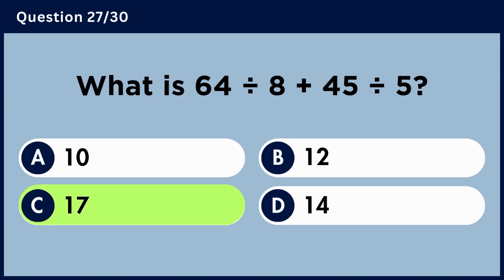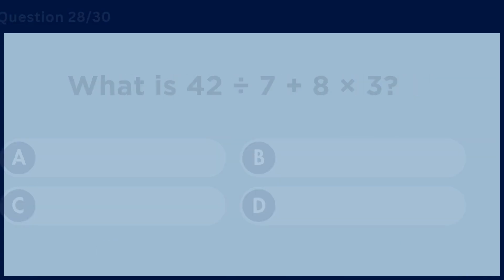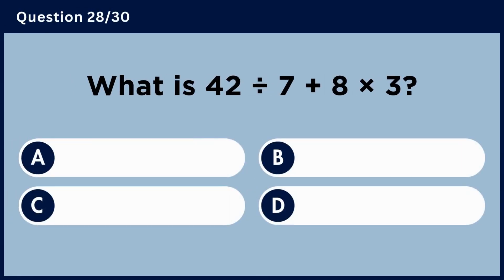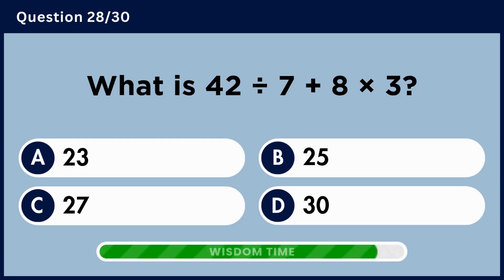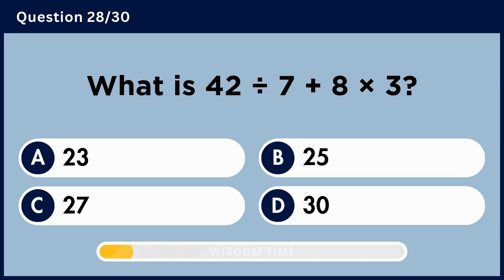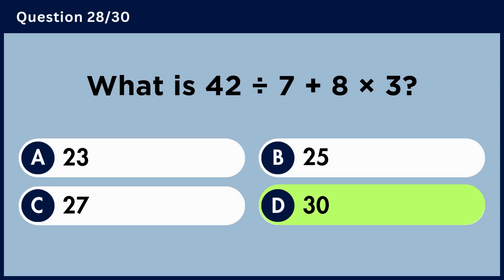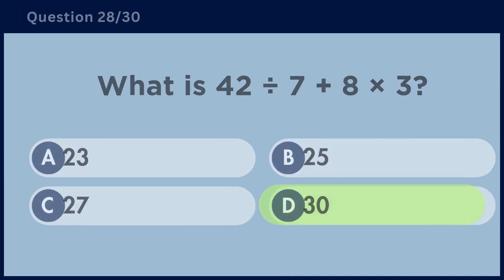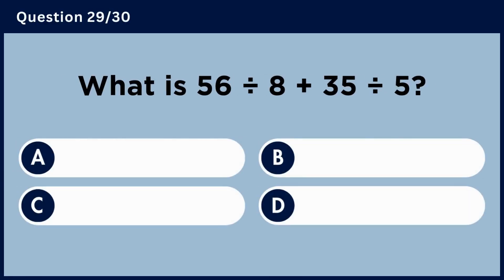What is 42 divided by 7 plus 8 multiplied by 3? Answer C, 17. What is 56 divided by 8 plus 35 divided by 5? Answer D, 30.